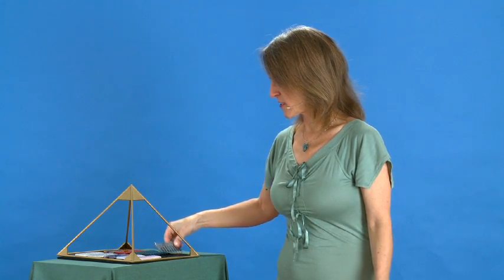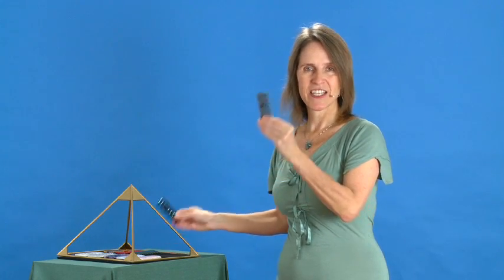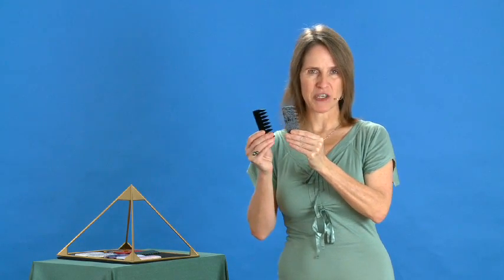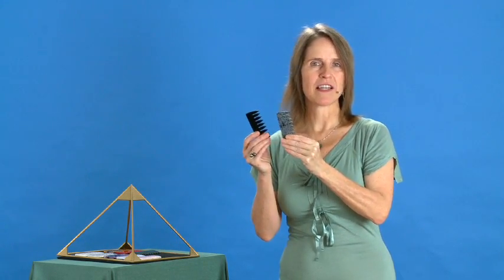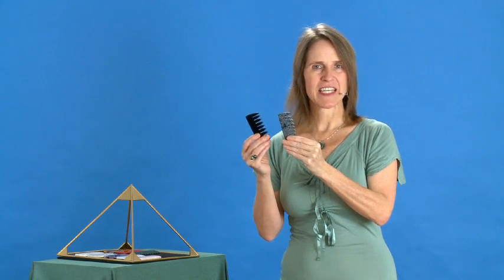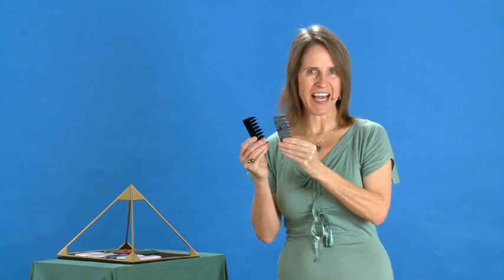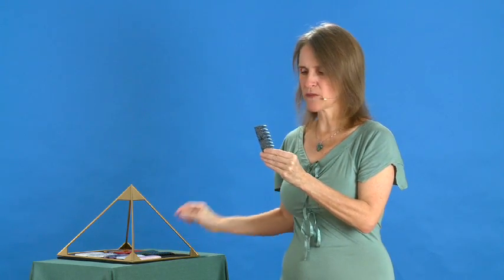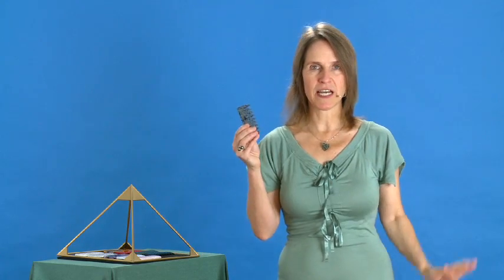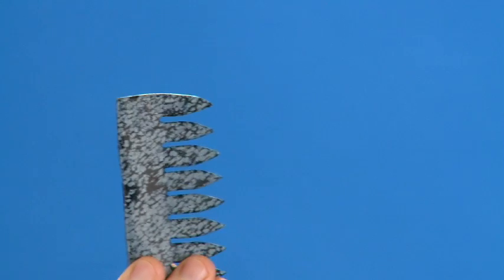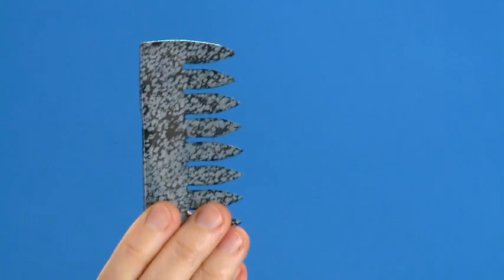The next two combs are both obsidians, the snowflake obsidian and the black obsidian. Both are lava. Basically, their molecular structure is very different from the other combs. They are more like glass. The snowflake obsidian gem comb helps with any type of pain, physical pain, emotional pain. And I want to share a little story with you.